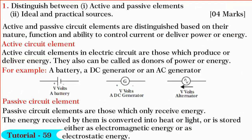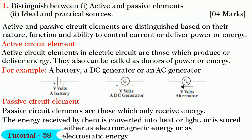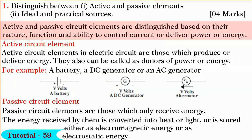First, let us answer Question 1: to distinguish between (1) active and passive elements and (2) ideal and practical sources. Active and passive circuit elements are distinguished based on their nature, function, and the ability to control current or deliver power or energy.